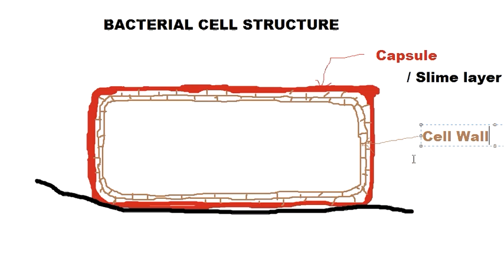This cell wall can be of two types in structure in bacteria. Based on the type of cell wall a bacteria possesses, we can classify bacteria into two types: the gram-positive cell and the gram-negative cell. That will be a topic of discussion for the next video — the cell wall will be dealt with in detail there. So that was the cell wall.